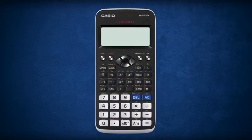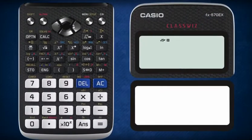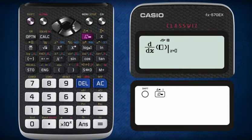Now to check your answer, let's use the Casio ClassWiz. Press Shift and the integration button.